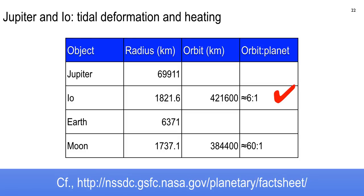Saturn's rings are apparently 4.6 billion years old according to the BBC. Though I've heard others say maybe only about 100 million years. We'll go with that for now. The space shuttle is way inside the Roche limit for our moon, but not its own Roche limit — if you have something small, it can get really close before it starts to break apart.